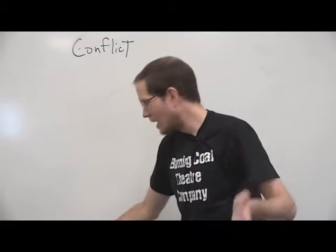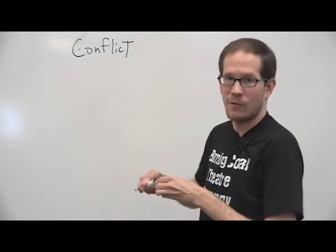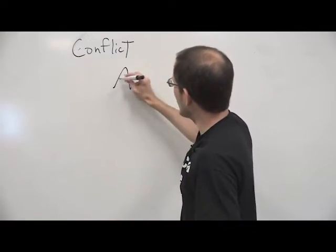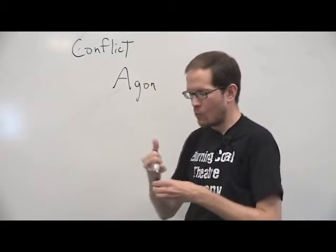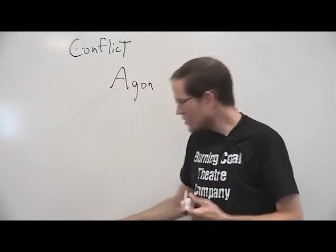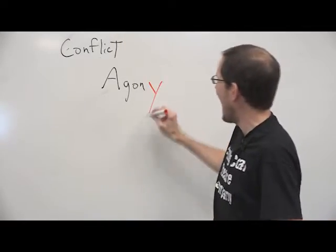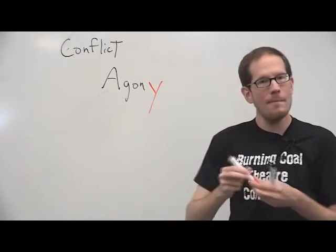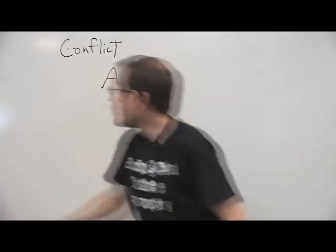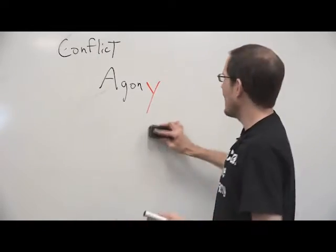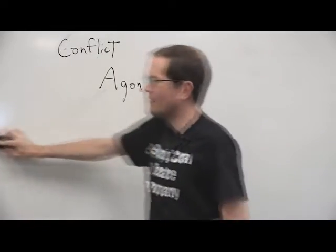The Greeks — remember Aristotle? — had a fancy word for conflict: they called it agon. You may hear me use that word. It's the same word we get 'agony' from, which means pain and suffering. So your play has got to have agon — it's got to have conflict.